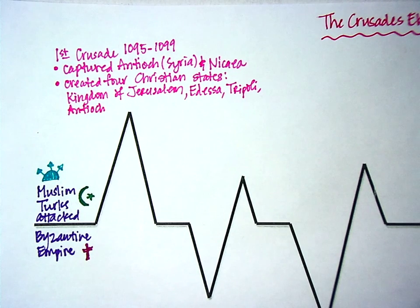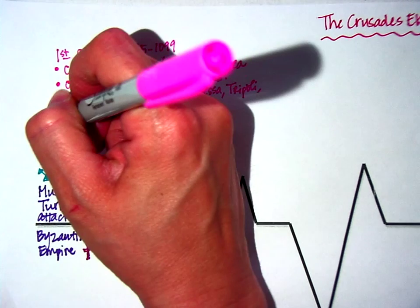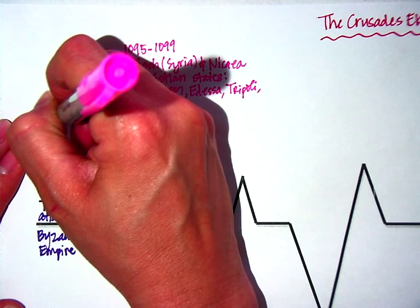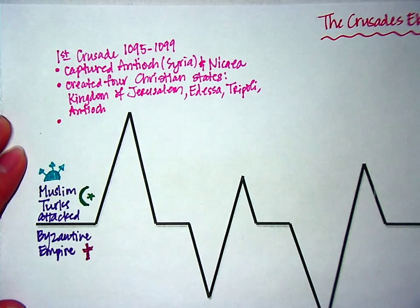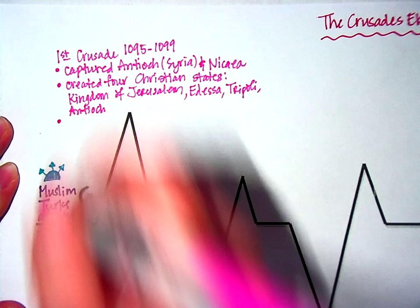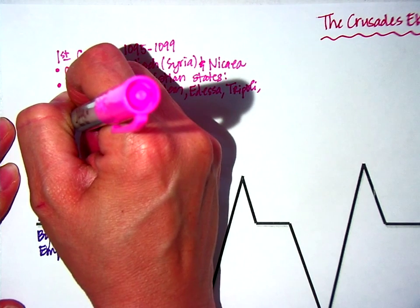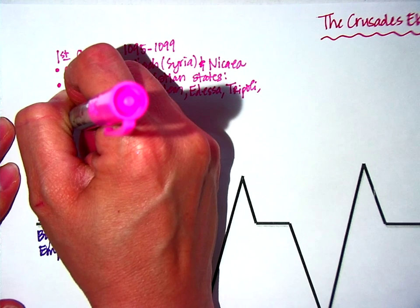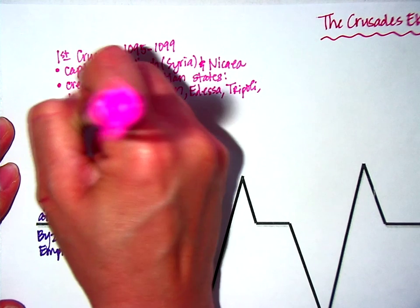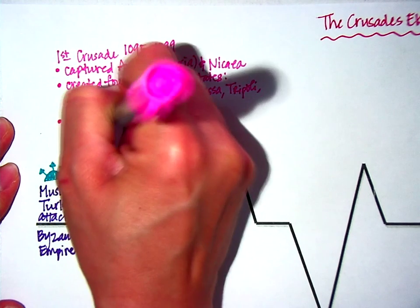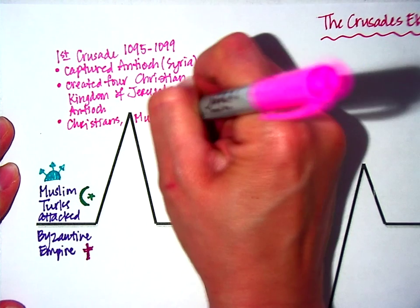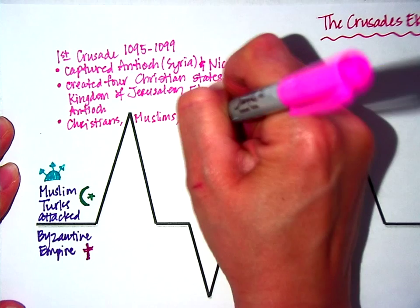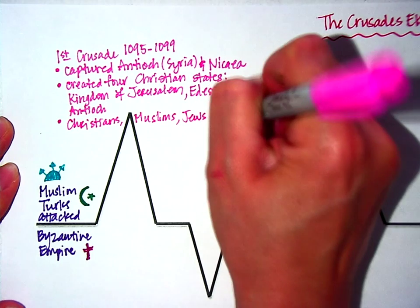This was a very positive result for the Christians because they got the land the pope wanted, and Jerusalem — the holiest city for Christians — was made into a Christian city during the First Crusade. When there's war, people die, so it shouldn't be surprising that Christians and Muslims died during this battle. What should be surprising is that Jews were also killed — Christians, Muslims, and Jews were killed.